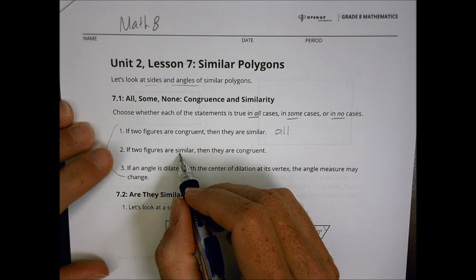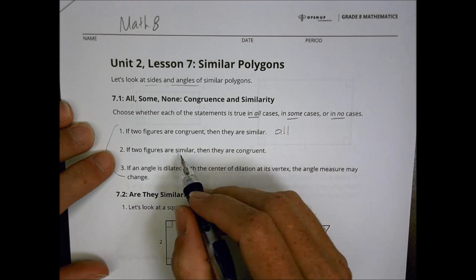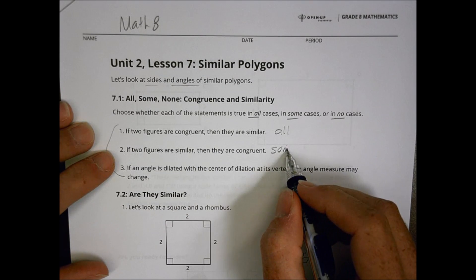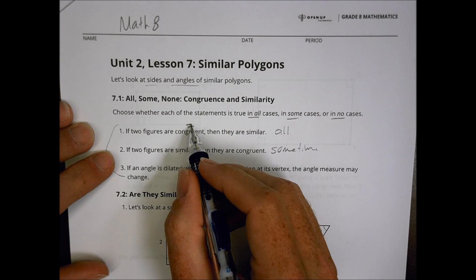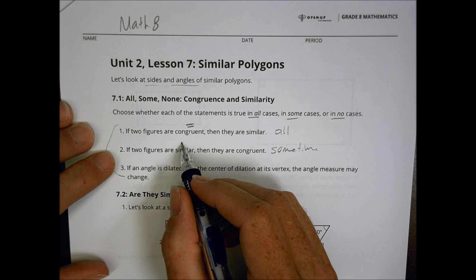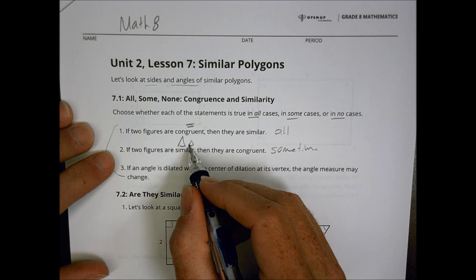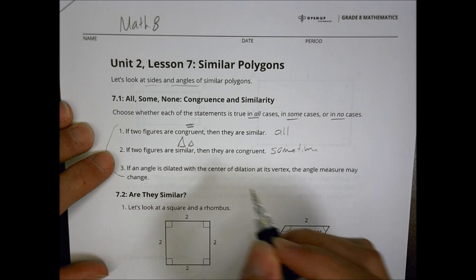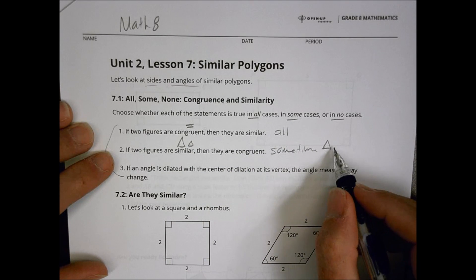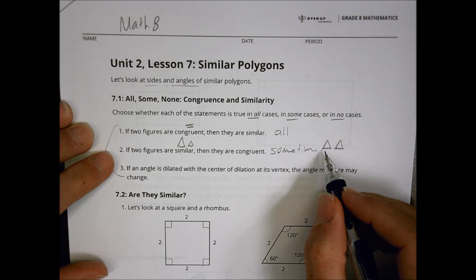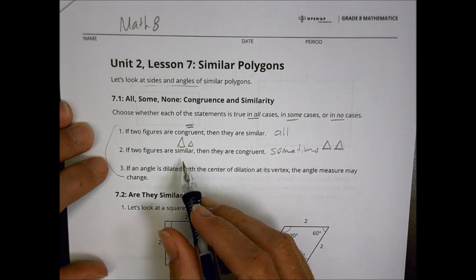That's how that works there, but if they're similar, are they congruent to one another? This is going to be a sometimes. Congruent means they're equal in every single way possible. Similar might mean that you have a big one and a little one. So those wouldn't be congruent, they're similar, but sometimes you can have, if you have the same size shape, we would say that they are similar and they're congruent. So that's why it's a sometimes there.